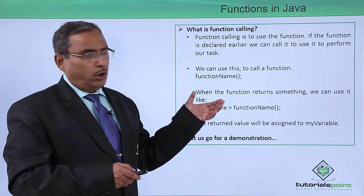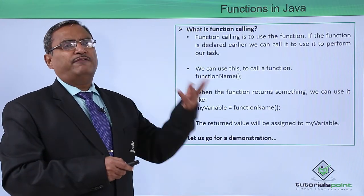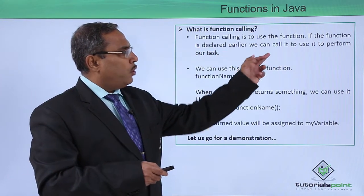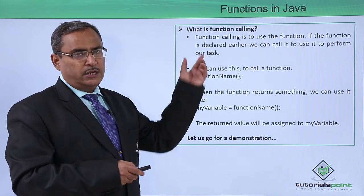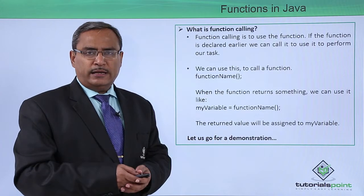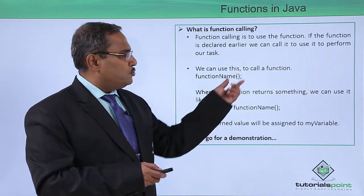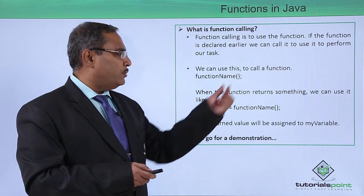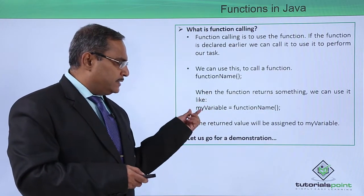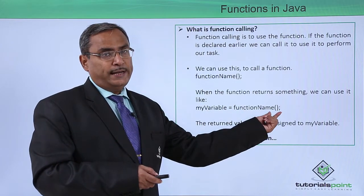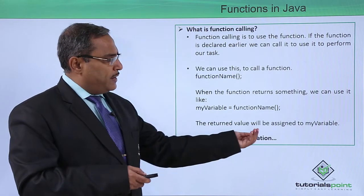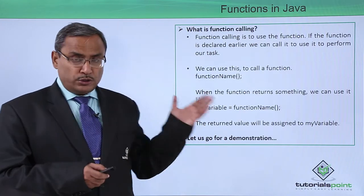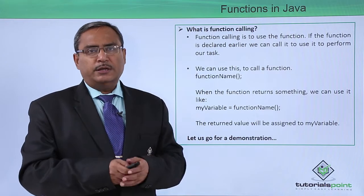Function calling is simply to use the function. When you call a function, the respective function code gets executed. The syntax is: function name followed by opening and closing parentheses, then a semicolon. When a function returns something, you can capture it like: myVariable = functionName(). The return value will be assigned to that variable.